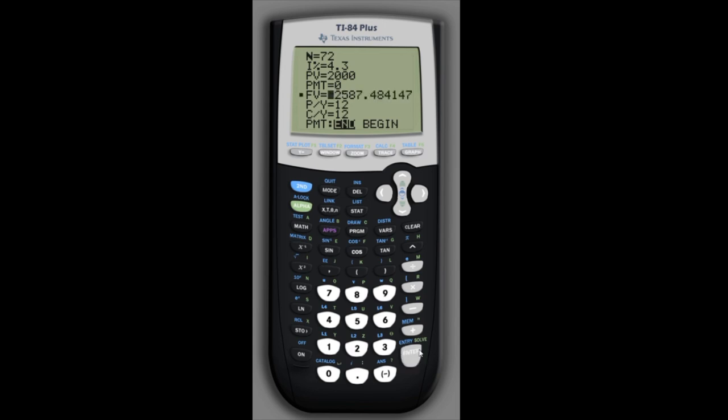And that would grow to a future value of $2,587.48. And so you can solve for any unknown piece here if you tell the solver the values of the other pieces.